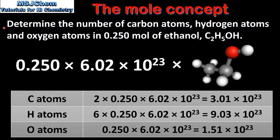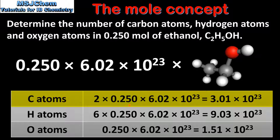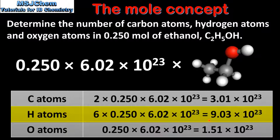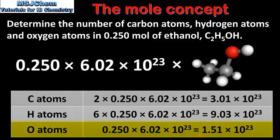In the next example we'll determine the number of carbon atoms, hydrogen atoms, and oxygen atoms in 0.25 moles of ethanol. One molecule of ethanol consists of 2 carbon atoms, 1 oxygen atom, and 6 hydrogen atoms. In 0.25 moles of ethanol we have 0.25 times 6.02 x 10 to the 23 ethanol molecules. For the number of carbon atoms we multiply 2 by 0.25 by the Avogadro constant, which gives 3.01 x 10 to the 23 carbon atoms. For hydrogen atoms we multiply 6 by 0.25 by the Avogadro constant, giving 9.03 x 10 to the 23 hydrogen atoms. For oxygen atoms we multiply 0.25 by the Avogadro constant, giving 1.51 x 10 to the 23 oxygen atoms.